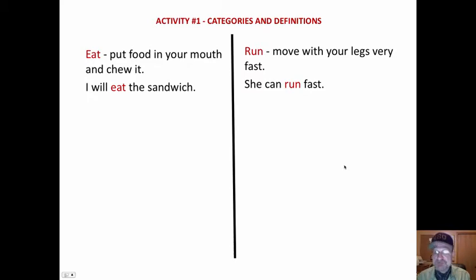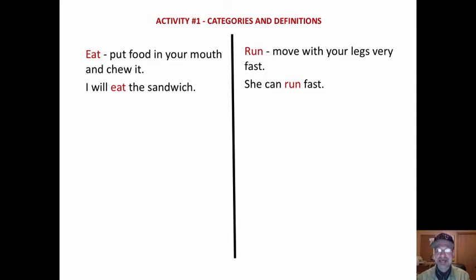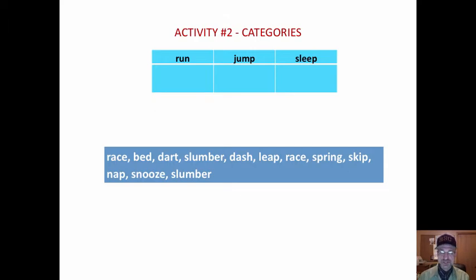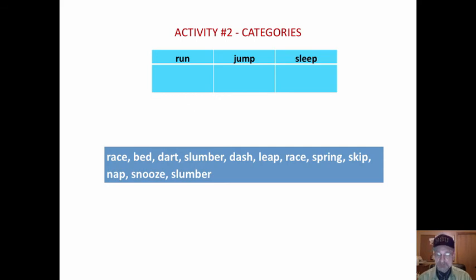If you want to simplify this, it works great in a large class or small group where they have conversation. You can simply give them the words and then they have to put the words in the categories. That's called categories and definitions. A related activity is to simply give them a box of words — a whole bunch of words — and children have to find the related word and put it in the right category. Two simple ideas to add depth and dimension to word knowledge: categories and definitions, or simply categories.